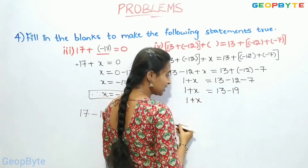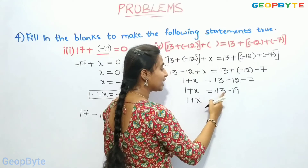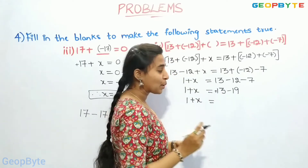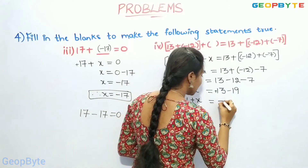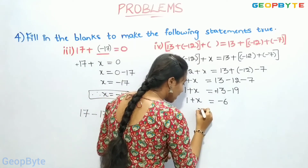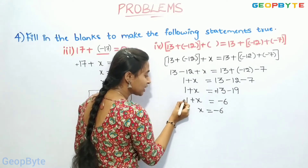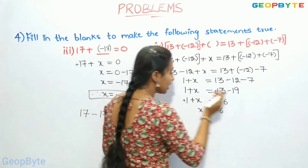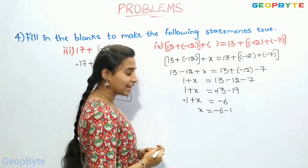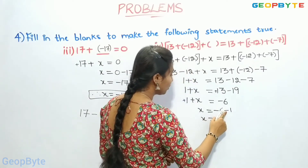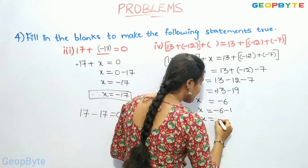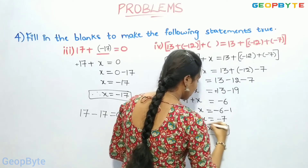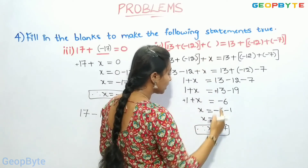So we have 1 plus x is equal to 13 plus minus 19. That is, plus 13 minus 19 — plus into minus gives minus — 19 minus 13 is 6, and the sign for the greater number is minus, giving minus 6. Now, x equals minus 6 minus 1, because this plus 1 becomes minus 1 when it goes to the right-hand side. Minus into minus gives plus: minus 6 minus 1 is minus 7. Therefore, x is equal to minus 7.